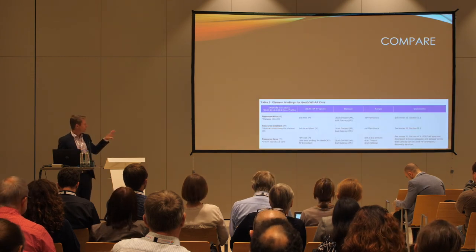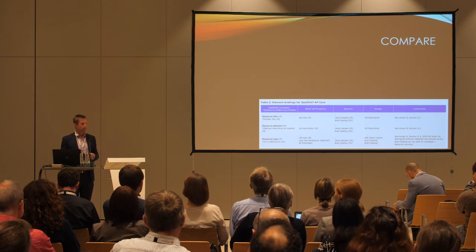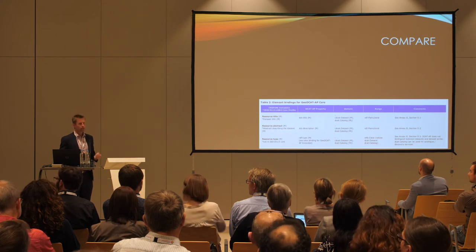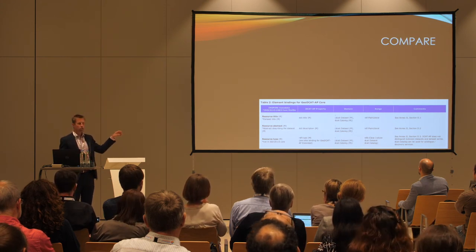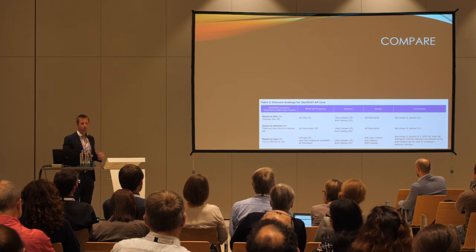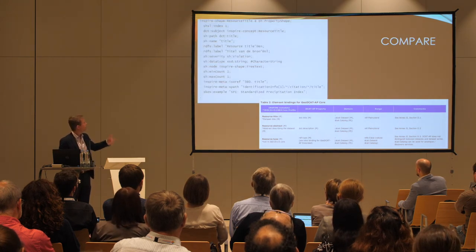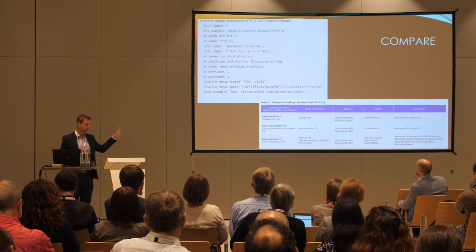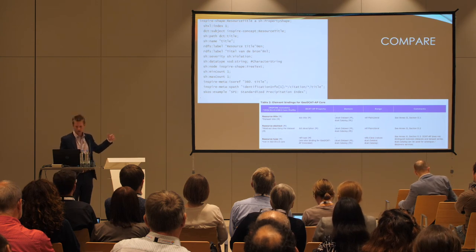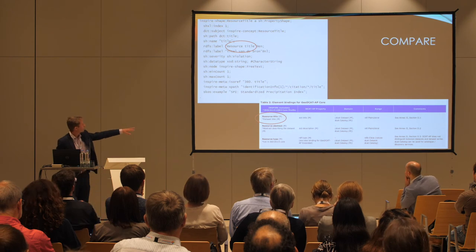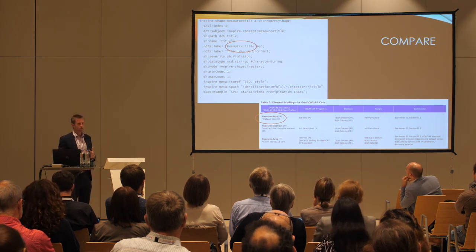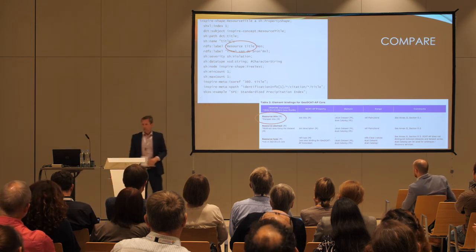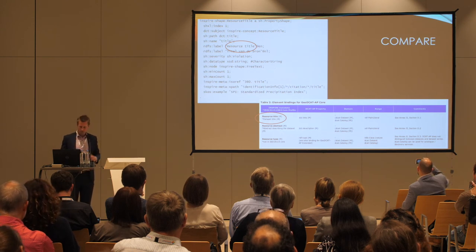In terms of comparison: this table from the GeoDCAT IP document states how an element in DCAT can be used to specify an element in the INSPIRE metadata standard. This is text — one part of 300 pages to look through. We can translate this into a formal SHACL document. It's a linked data format called Turtle, which is quite readable. Here you can see the resource title, and other parts of the document are also there. There are also tags that are not strictly from the SHACL standard, but because it's linked data, we can add references from one side to the other.